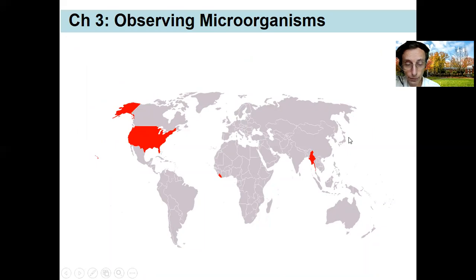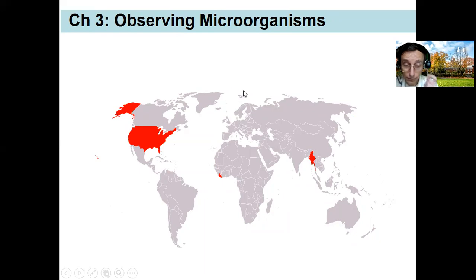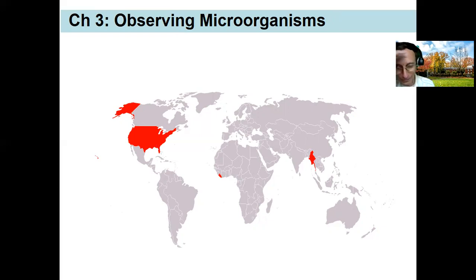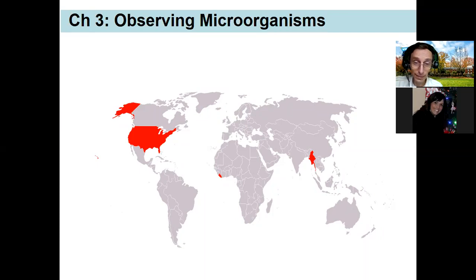There are two very good reasons for using the metric system. One: all of the countries in color on this map are the countries that do not use the metric system. As you can notice, there's only one big country in the world that does not use the metric system. The United States is slowly converting — it was actually proposed in Congress when President Jefferson was president, that the United States slowly convert from the English system to the metric system.